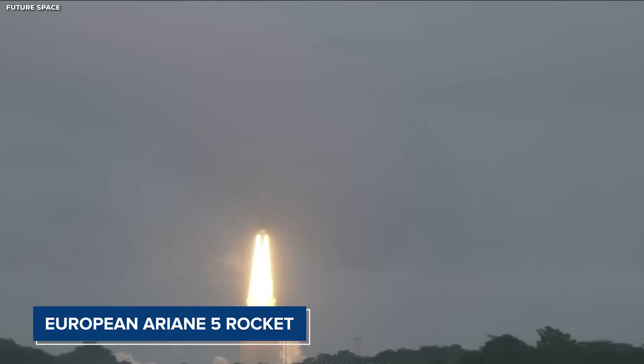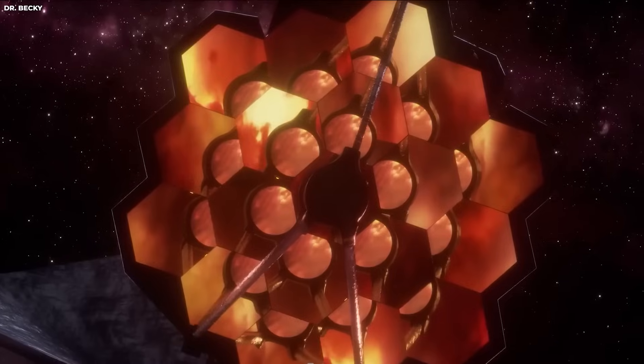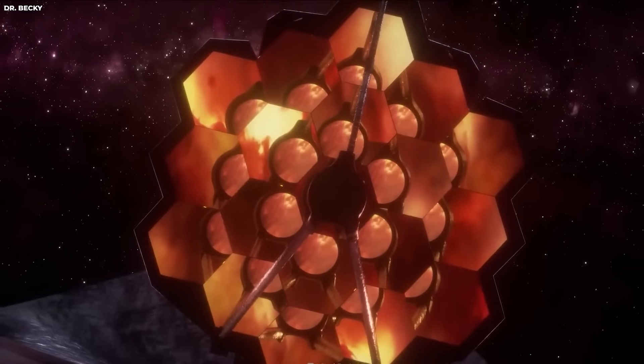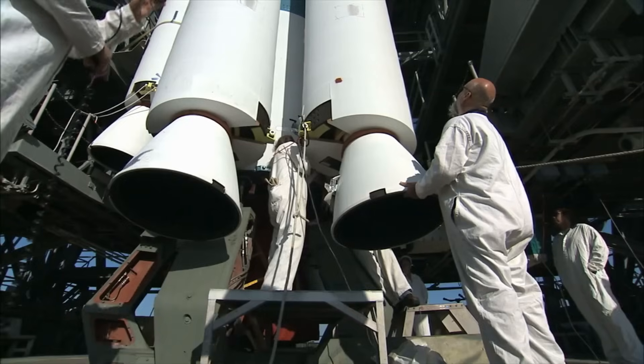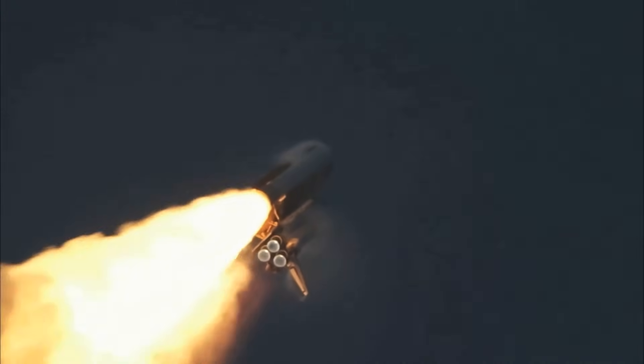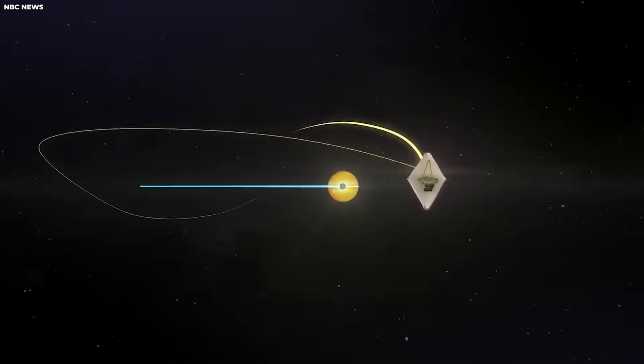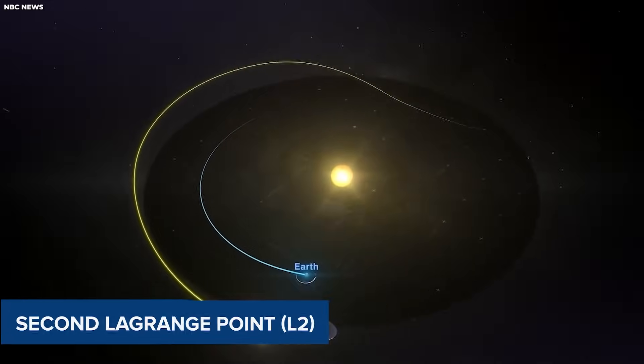Aboard a European Ariane 5 rocket, with a budget exceeding $10 billion, the launch of such a complex instrument into space always carries risks. However, this mission went off without a hitch, and after a month-long journey of nearly a million miles, the JWST reached its designated position in space known as the second Lagrange point, L2.